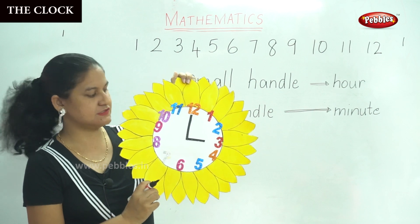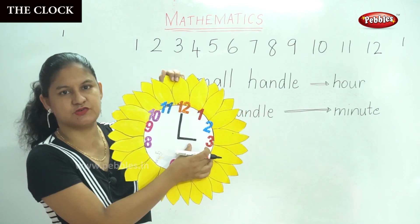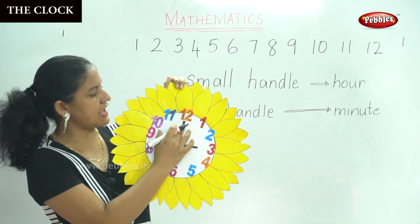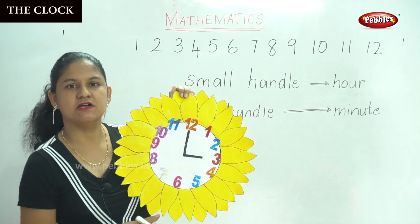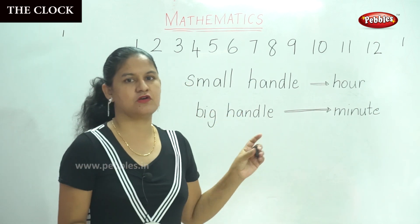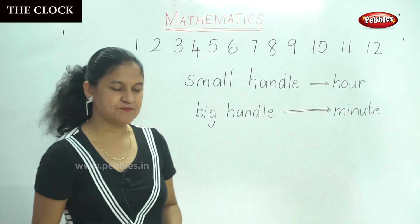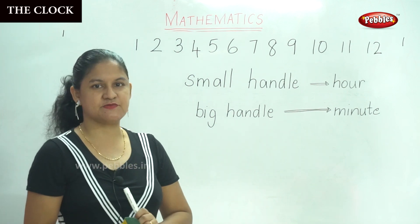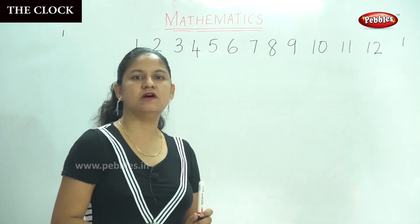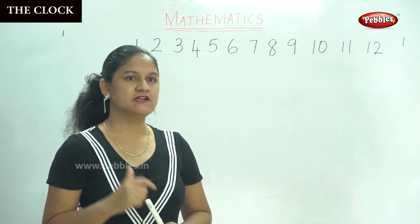So when you see the clock, the small handle points to number 3 and the big handle points to number 12. So we will draw the clock on the board and I will tell you how to see the time. Are you ready to do this activity with me? I am going to draw a square clock — a clock in the shape of a square.